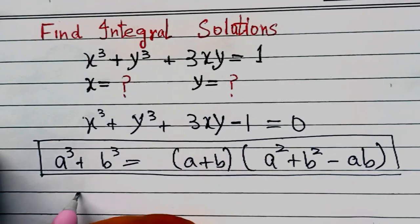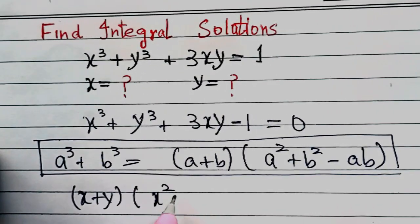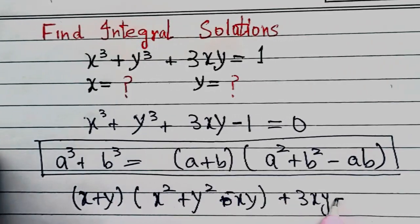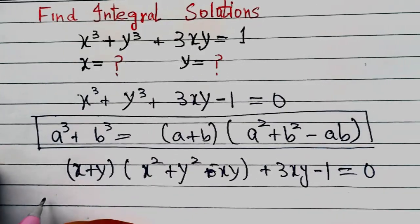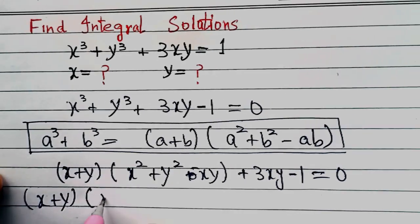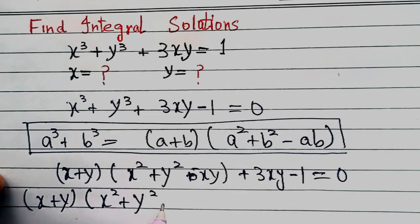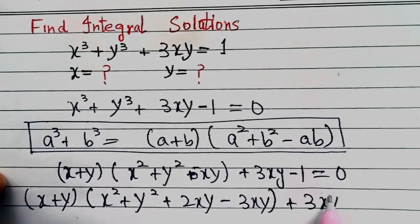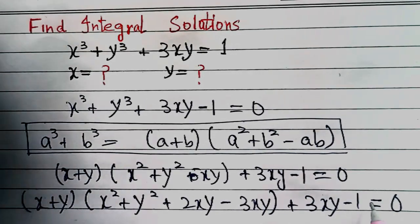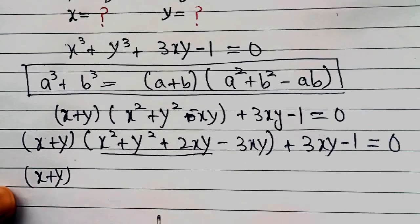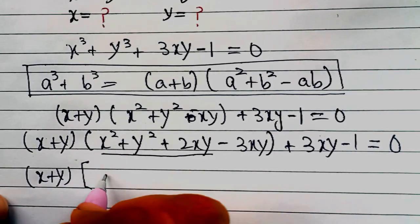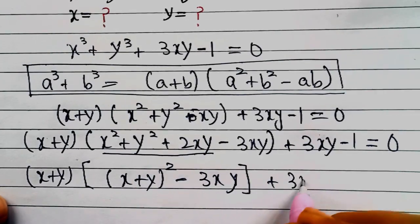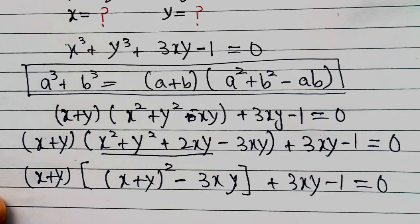This becomes (x + y)(x² + y² - xy) + 3xy - 1 = 0. Now the term -xy can be written as +2xy - 3xy, so we get (x + y)(x² + y² + 2xy - 3xy) + 3xy - 1 = 0. Since x² + y² + 2xy = (x + y)², we write (x + y)((x + y)² - 3xy) + 3xy - 1 = 0.